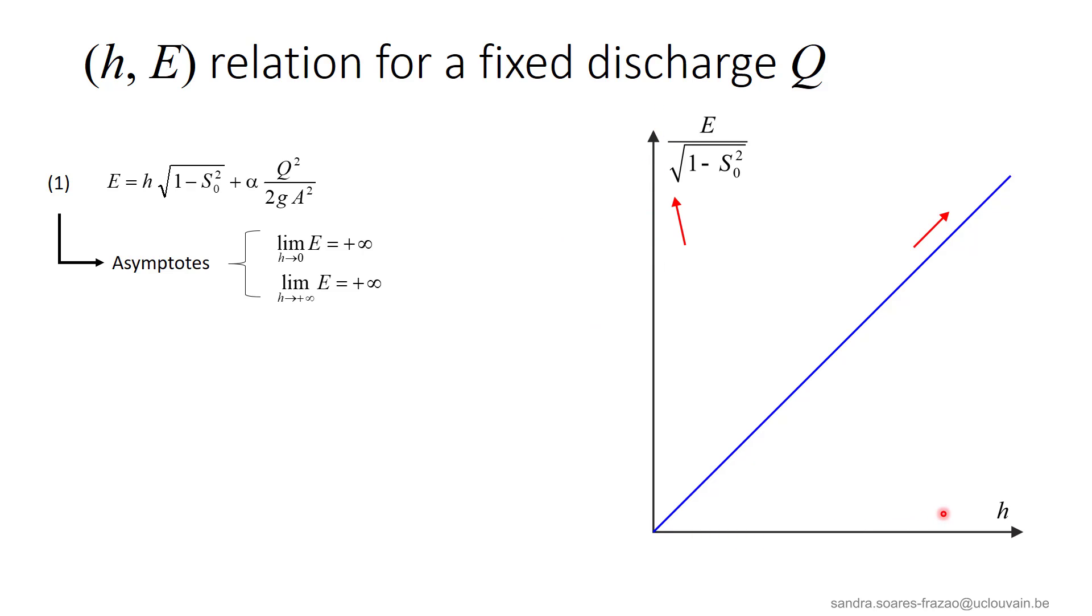Then, if H approaches infinity, E will also tend to infinity. Indeed, as A will tend to infinity, this term here in equation 1 will disappear, and it remains only H. So, if we represent E divided by the square root of 1 minus S0 square in the ordinates here, the asymptote is the identity straight line. The curve between these two limits is the blue curve corresponding to this equation. We can see that for any point of this curve, the part below the straight line is the depth H, and the part above it represents the kinetic energy V square over 2G.